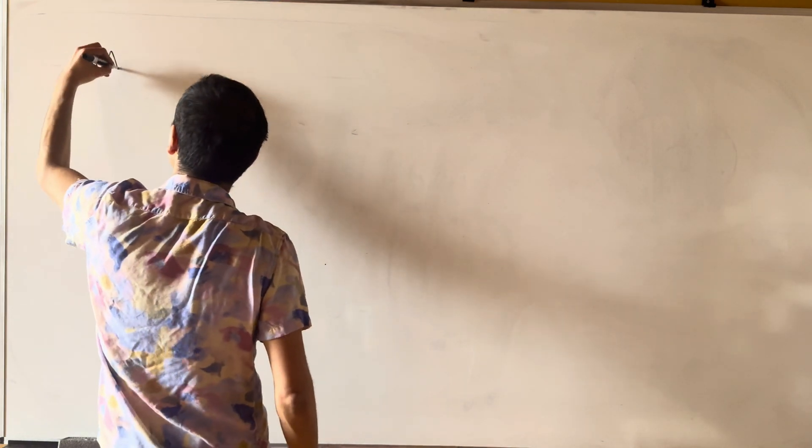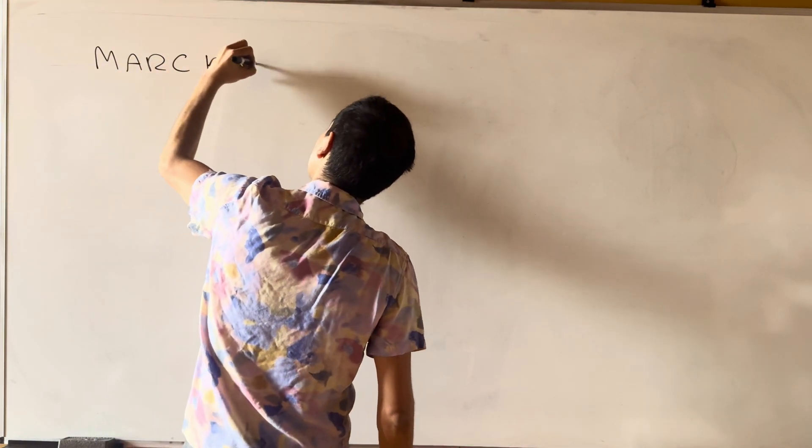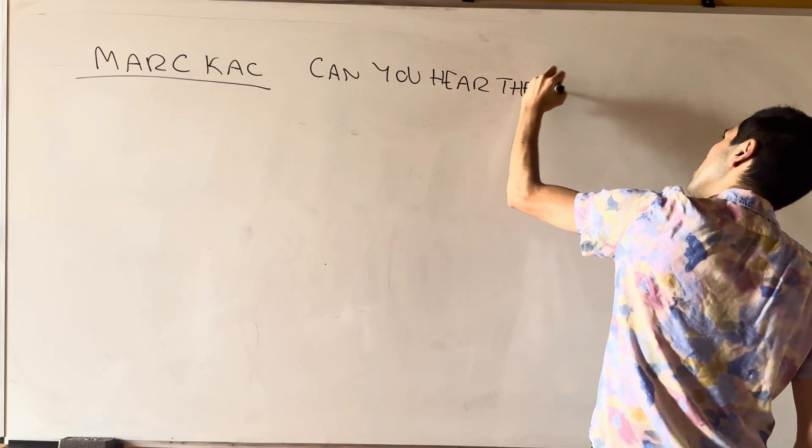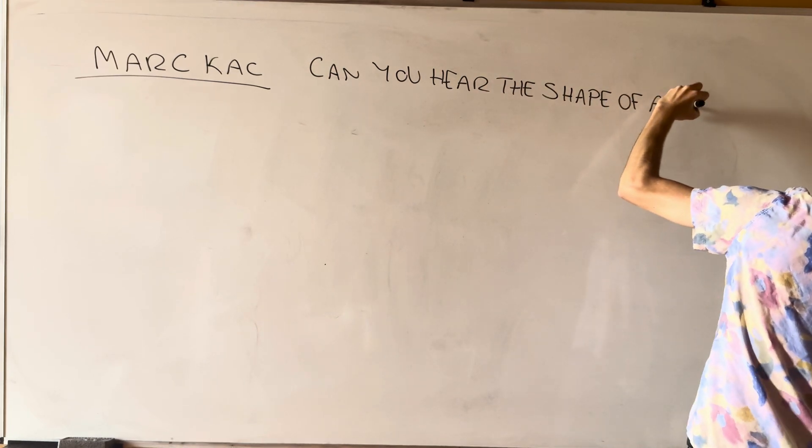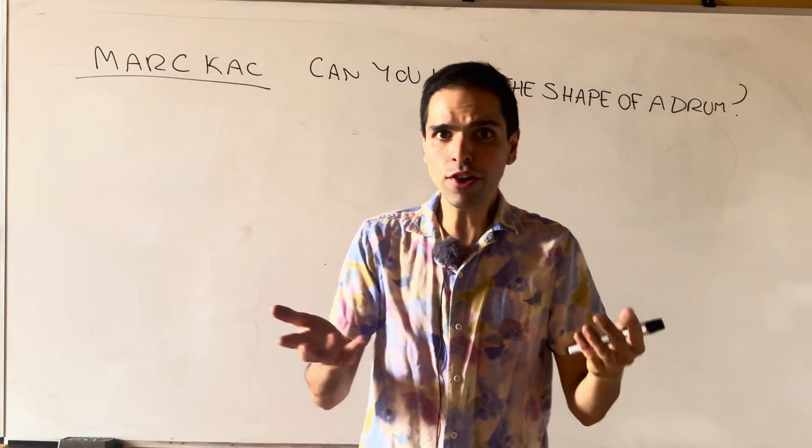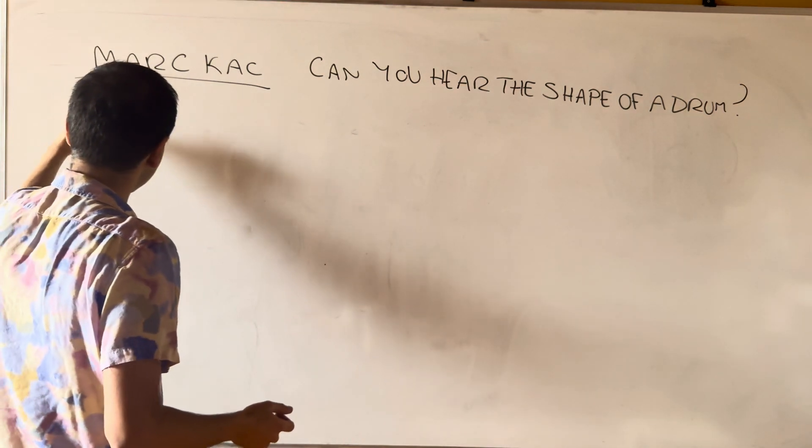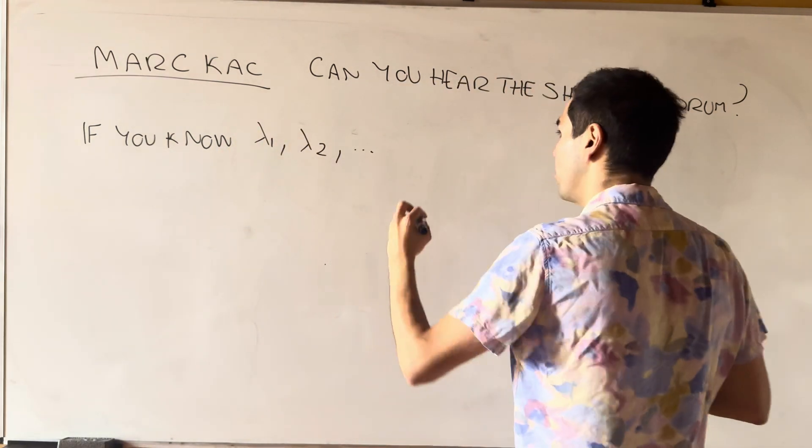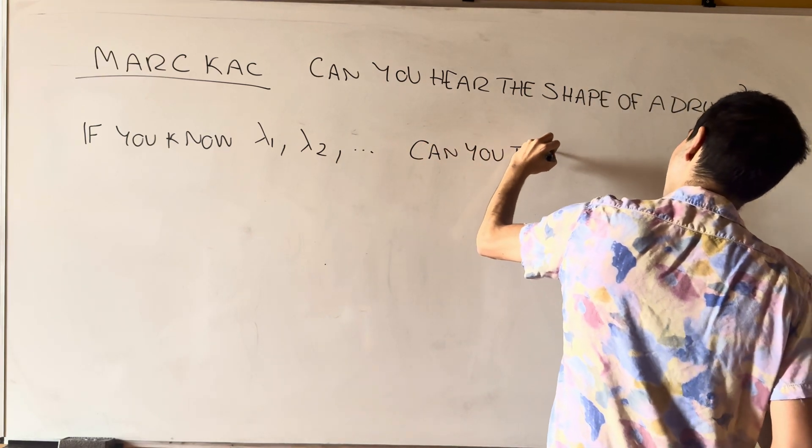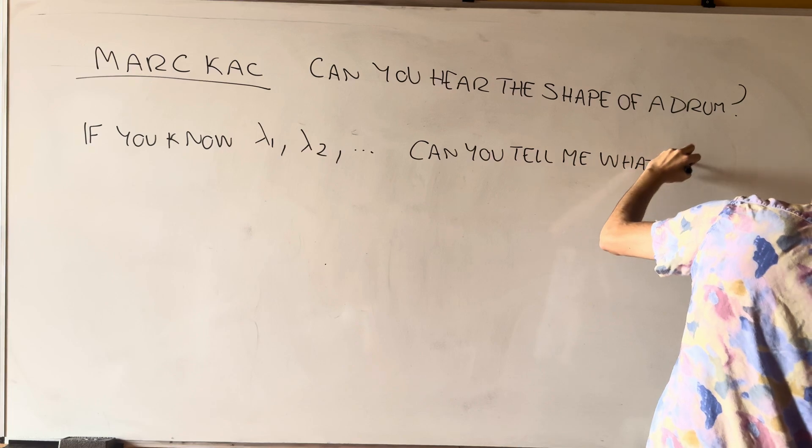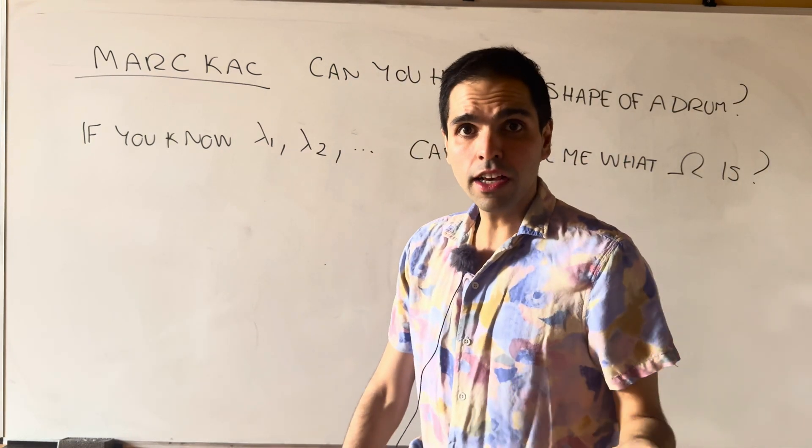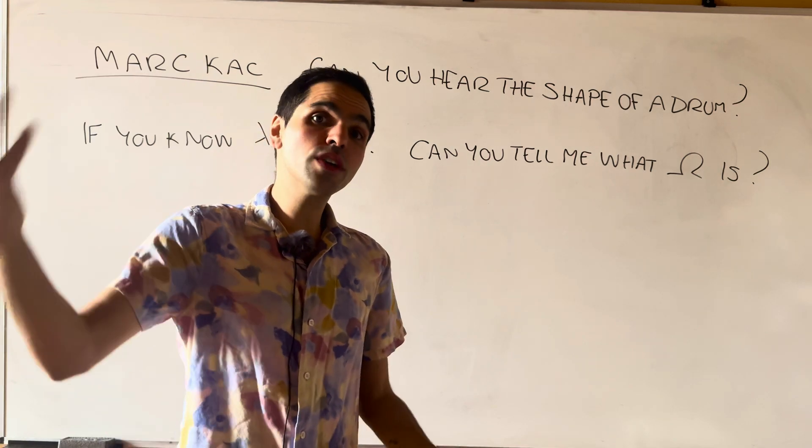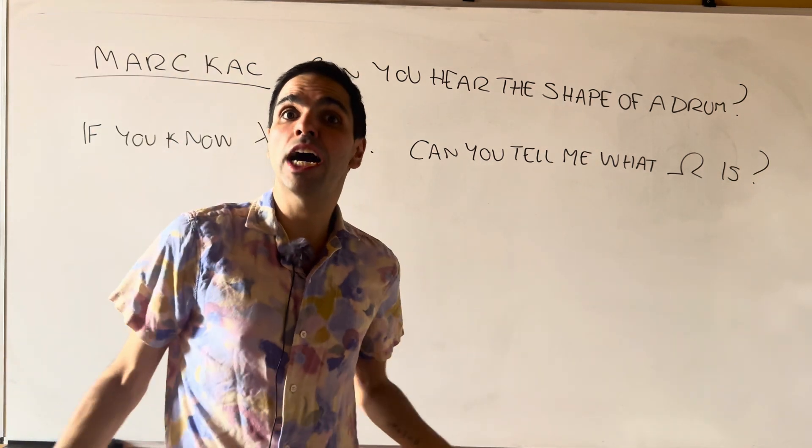So once again, super famous question by Mark Katz, can you hear the shape of a drum? In other words, if you hear the eigenvalues, or if you know lambda one, lambda two, what omega is or think of it in terms of real life. If your friend goes to another room and plays a drum and you can only hear the sounds, can you tell me what the drum looks like?